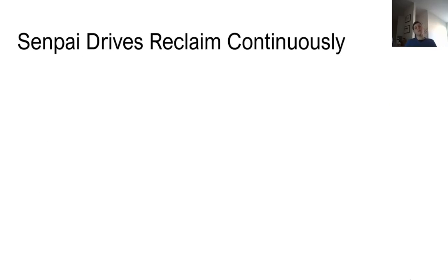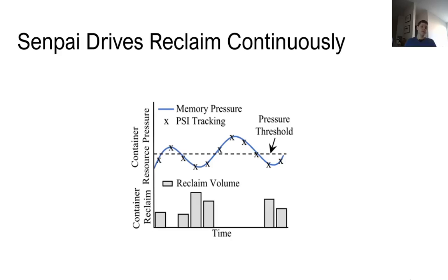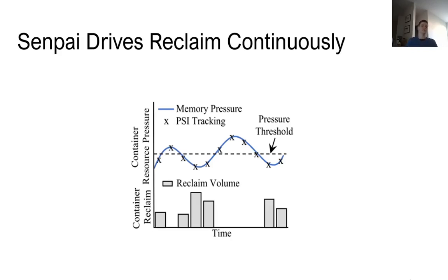The final component is Senpai, which drives reclaim continuously. For each container, Senpai measures its PSI metric and tries to keep a very low amount of PSI around some threshold, say 0.1%. When pressure is lower than this threshold, it increases its reclaim volume and continuously asks the kernel to reclaim more. As soon as pressure exceeds the target, it backs off and reclaims less. In doing so, it creates a constant amount of reclaim on each container — just enough that all cold memory is gone, but not enough that applications suffer serious performance loss.